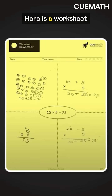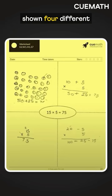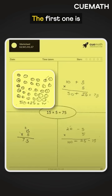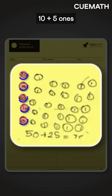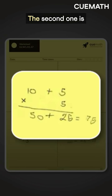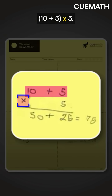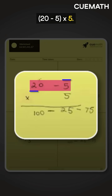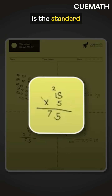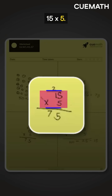At QMath, we flip this. Here is a worksheet by one of our grade 3 students, who has shown 4 different ways to represent 15 times 5. The first one is 10 plus 5, once added 5 times. The second one is 10 plus 5, times 5. The third one is 20 minus 5, times 5. And the last one is the standard 15 times 5.